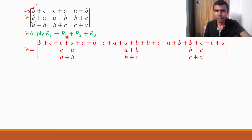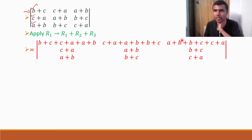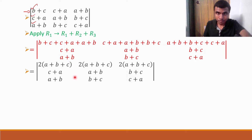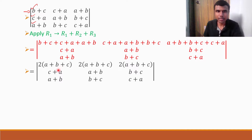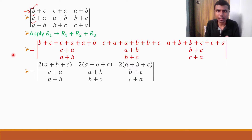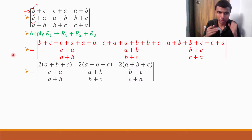Now let's simplify. B plus B is 2B, C plus C is 2C, and 2A — so I get 2A plus 2B plus 2C. Here also I'll get 2A plus 2B plus 2C, and here also 2A plus 2B plus 2C. That I wrote as 2 into A plus B plus C. This intermediate step is shown in red and is not strictly needed — I kept it so you can understand how the operation works. You need not write it in a formal solution.